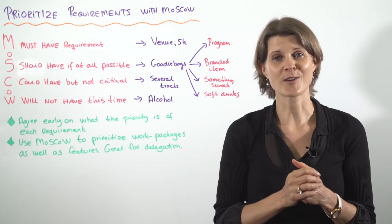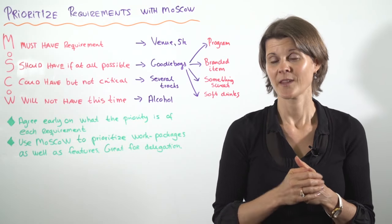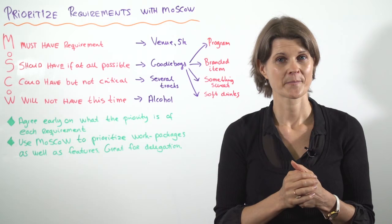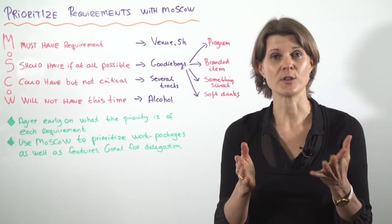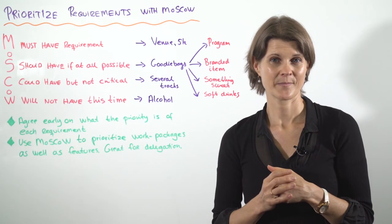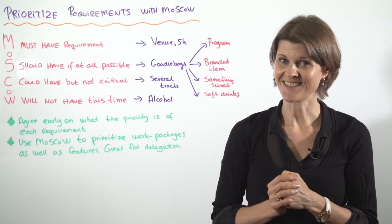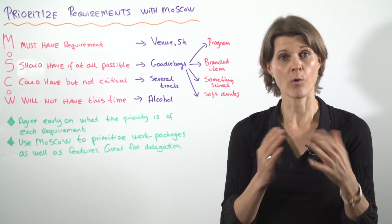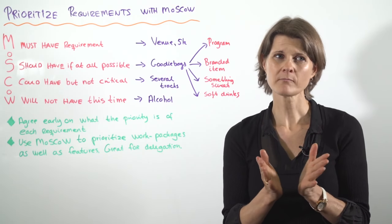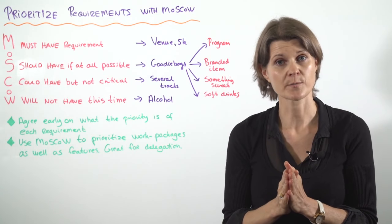The power of MoSCoW is that you can also use it at a more detailed level to look at the features of a requirement. Let's take an example with a goodie bag. Imagine that you have delegated that to Dan, and Dan would like to know your expectations. So Dan asks you: what must there be in the goodie bags when I deliver them?